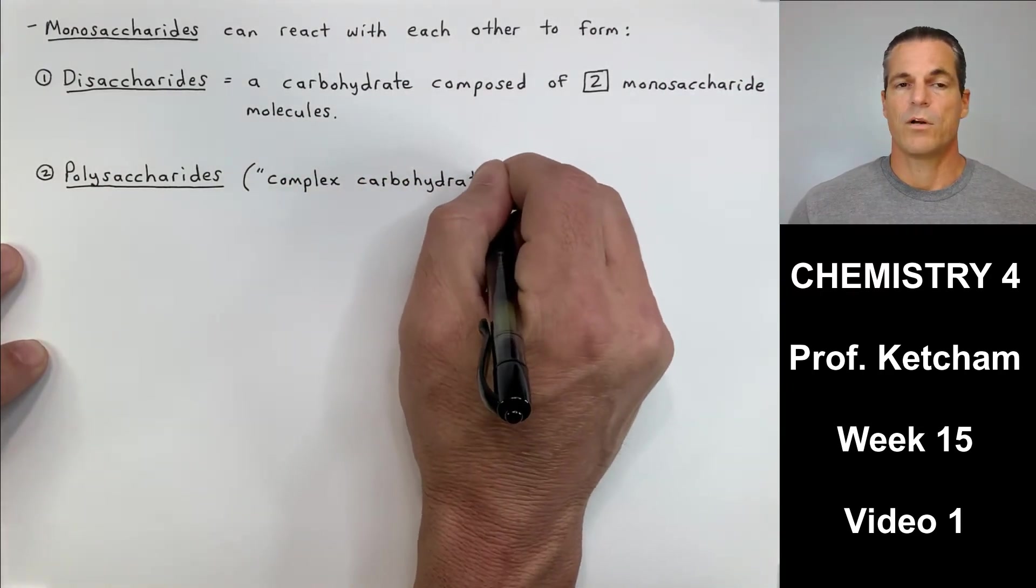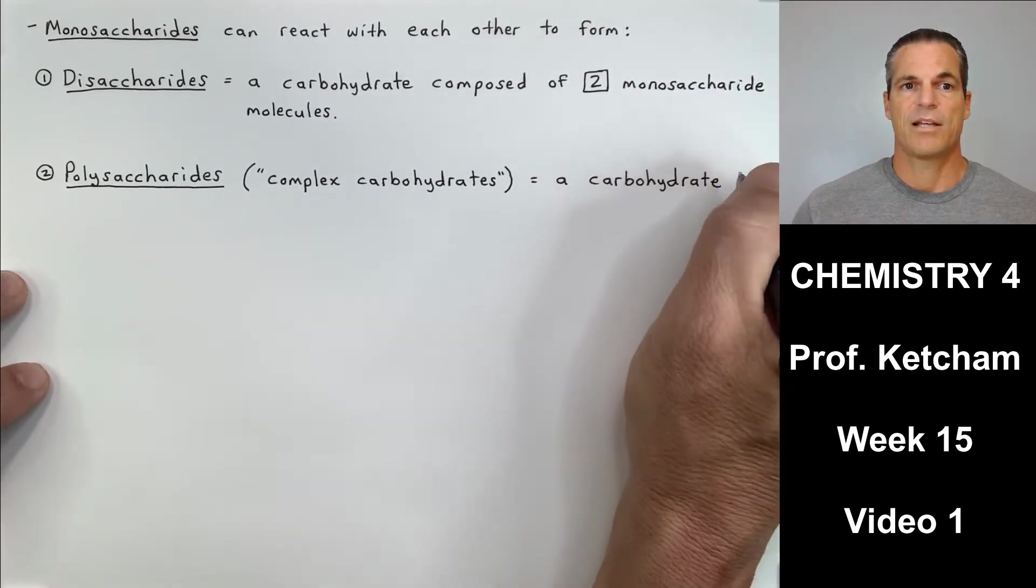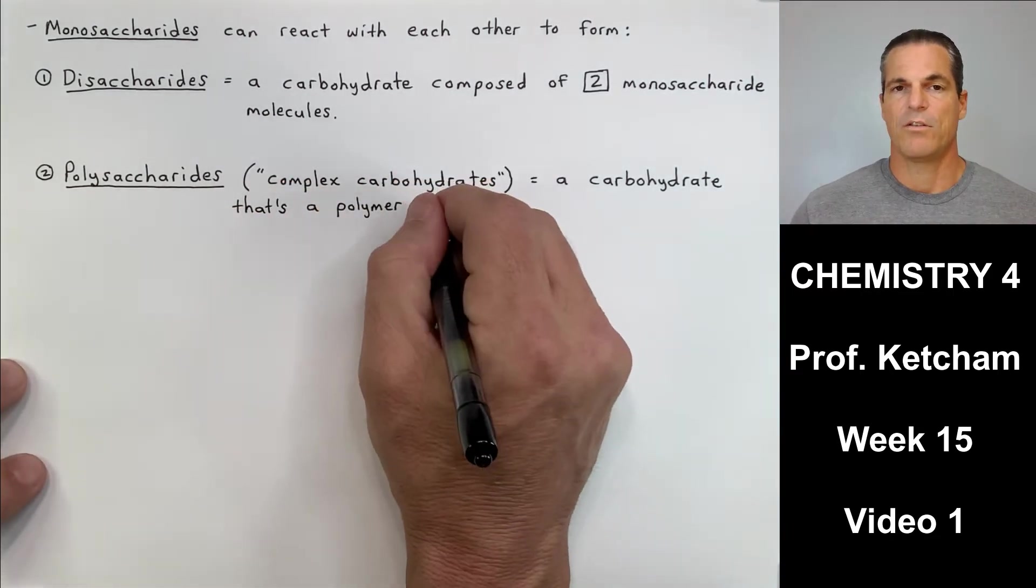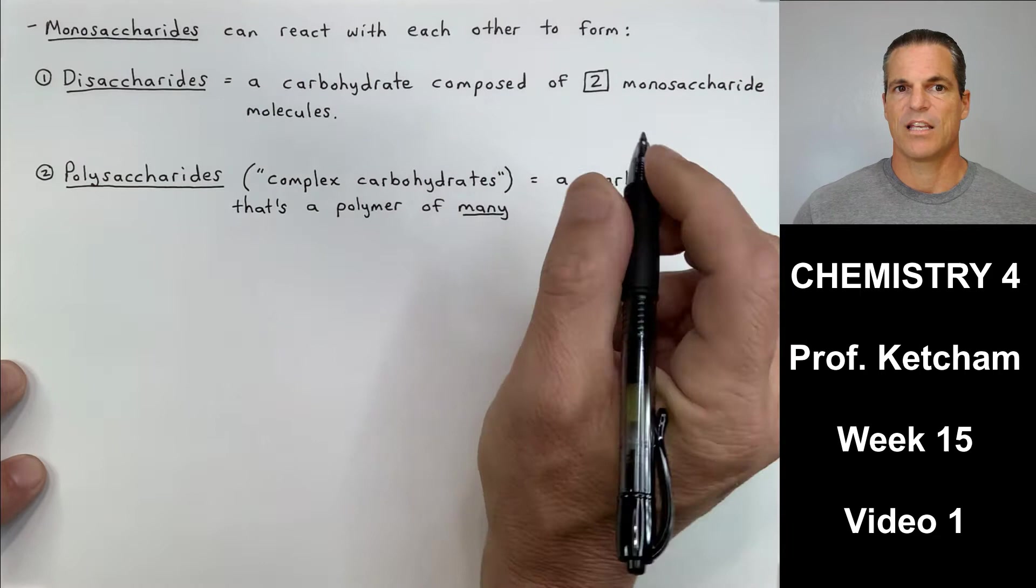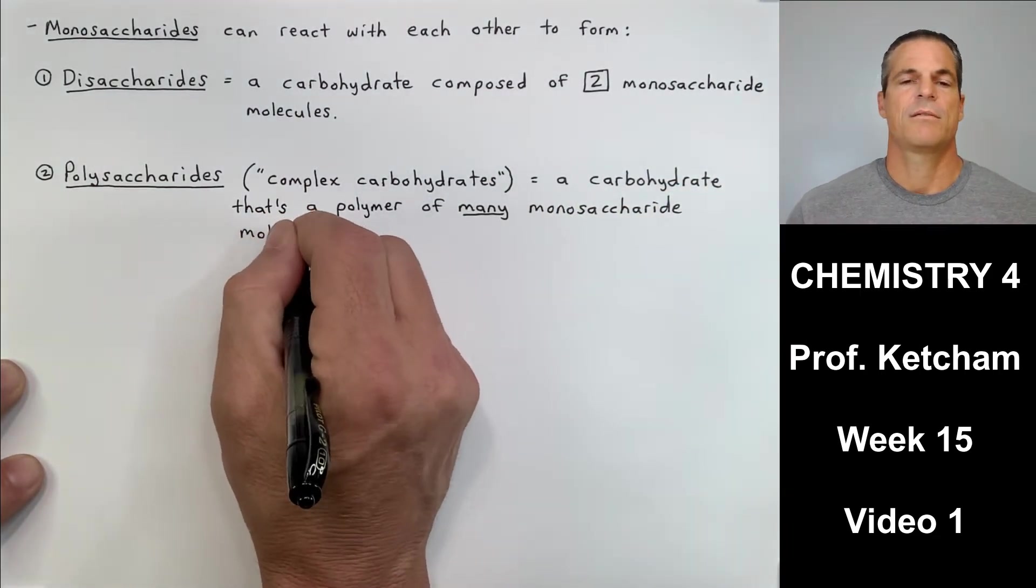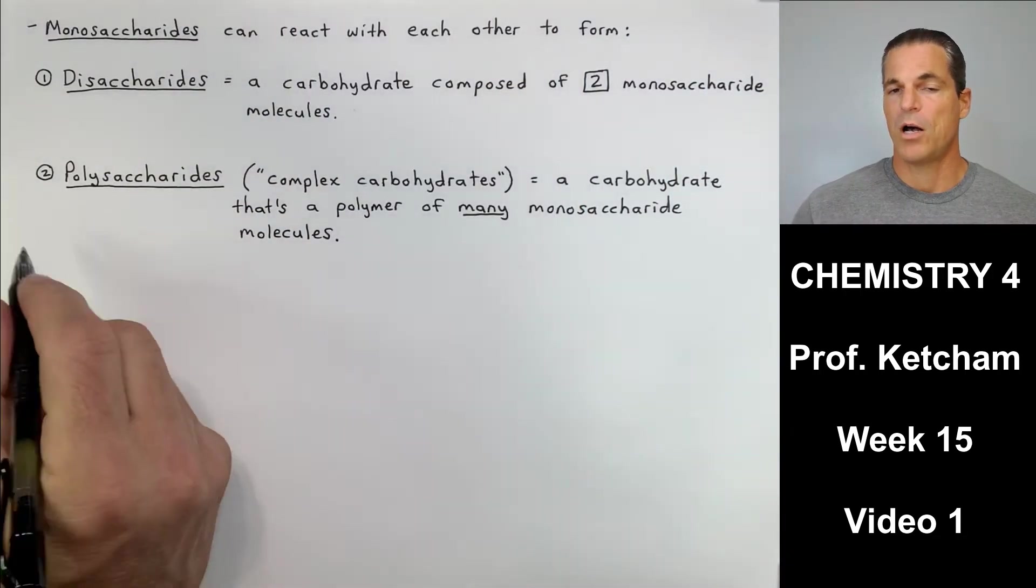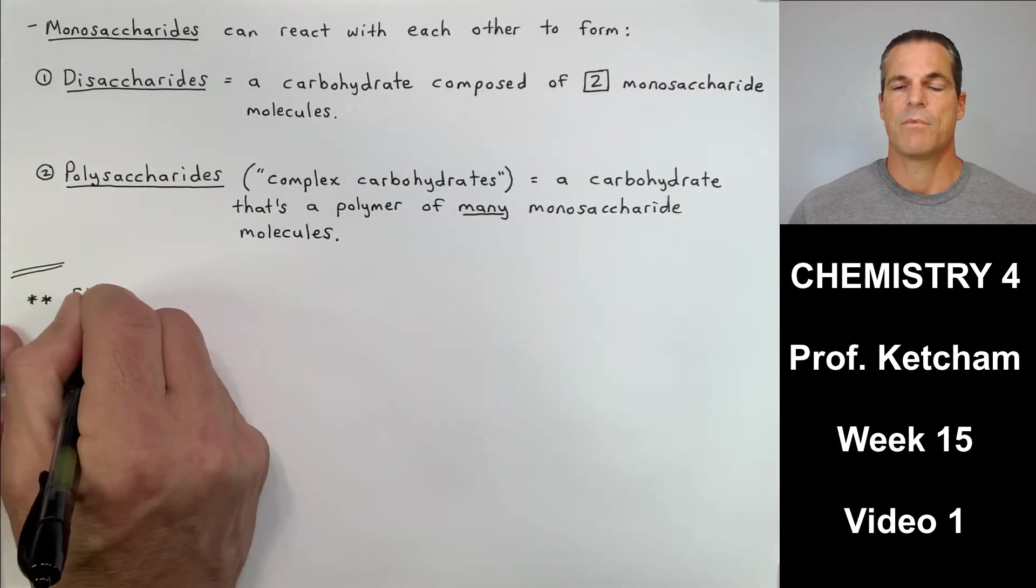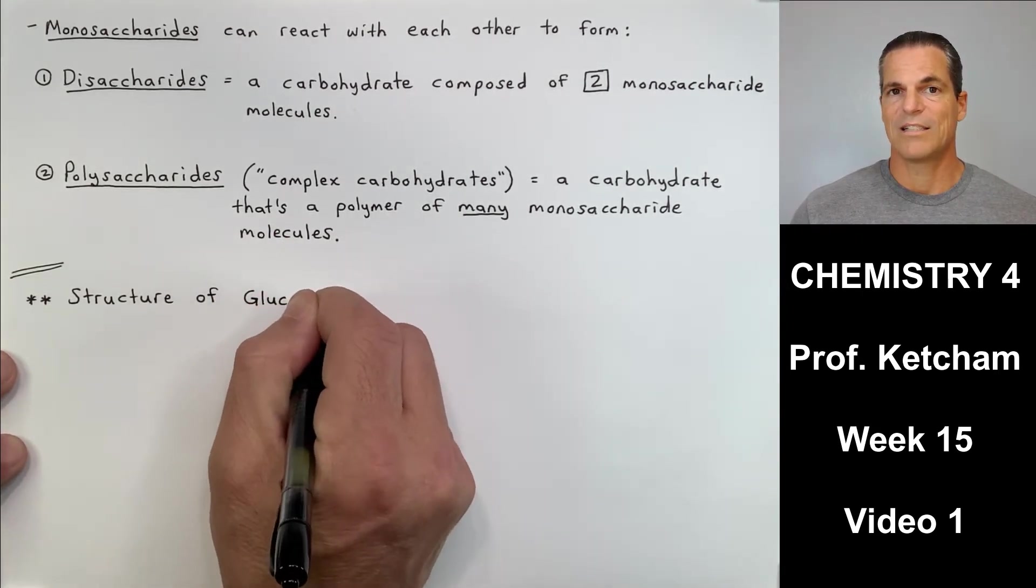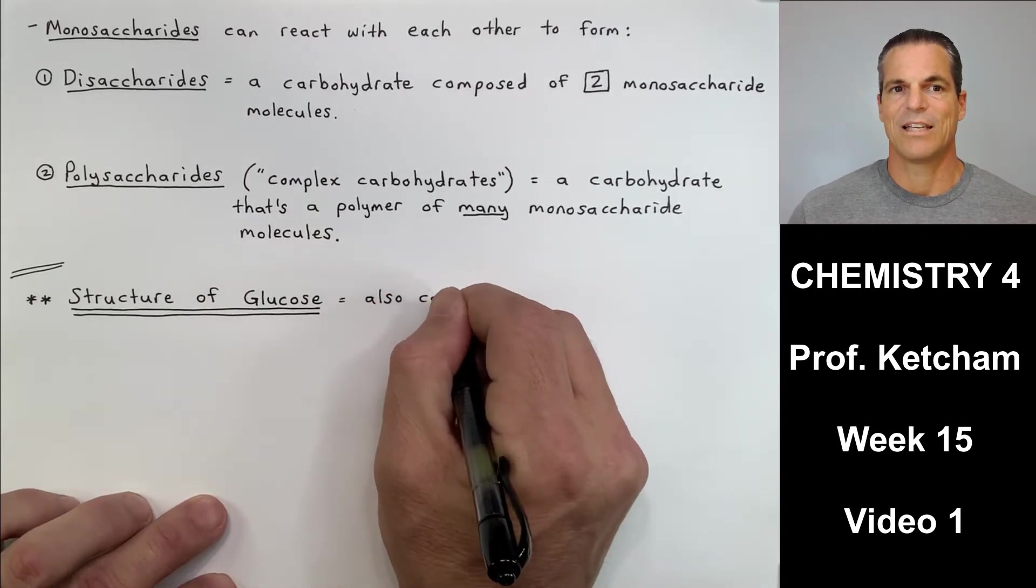Number two is a little bit more complex. Monosaccharides, we don't just have to make one link to make a disaccharide, but with polysaccharides, we have to make many of these links. And we'll talk about the links in the next video. Those are called glycosidic linkages. So polysaccharides are complex carbohydrates. And the definition of polysaccharides is a carbohydrate that's a polymer of many monosaccharide molecules. So a disaccharide has two monosaccharides linked together. Polysaccharides have many monosaccharides linked together.